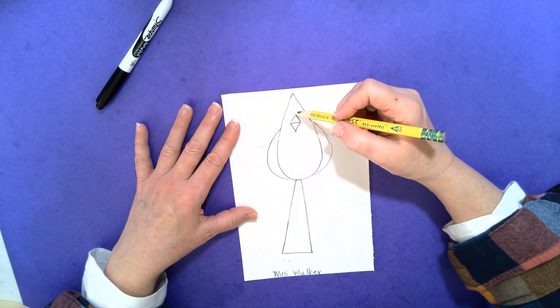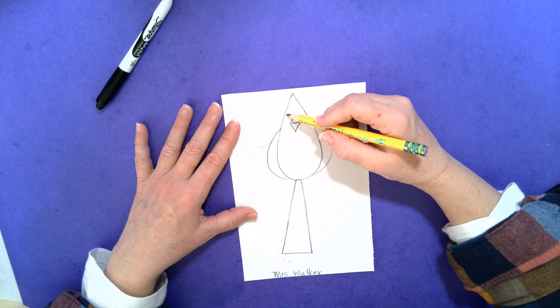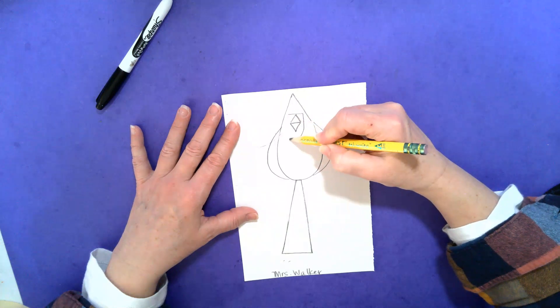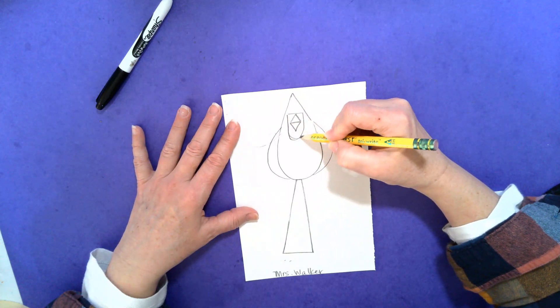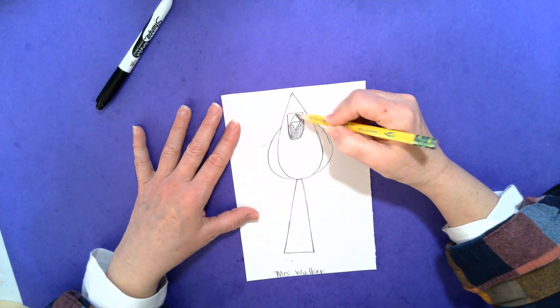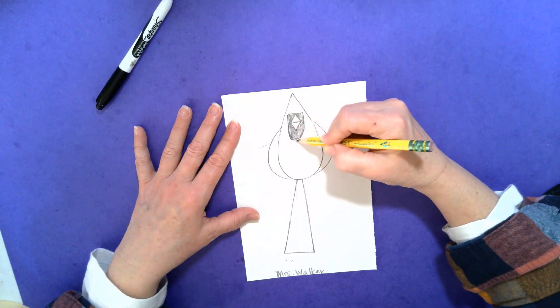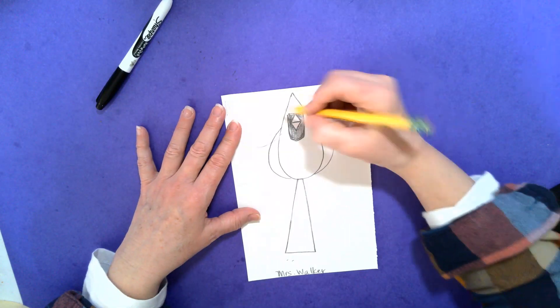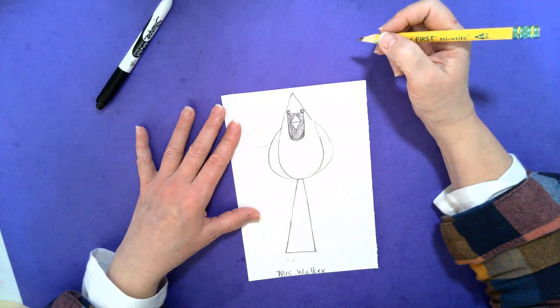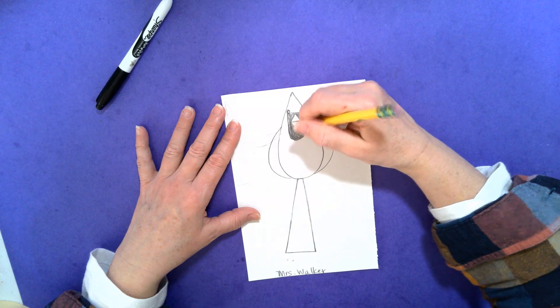And then cardinals have kind of a mask. So I'm going to draw a line that goes across, right above his beak, and then comes down like a U shape. That right there is going to have to get colored in black. So if you have a sharpie, or tracing yours with a sharpie, you'll want to fill that in black. And then his eyes are black also. I'm going to put those right here at the corners. So this would be a cardinal that's looking straight at me.